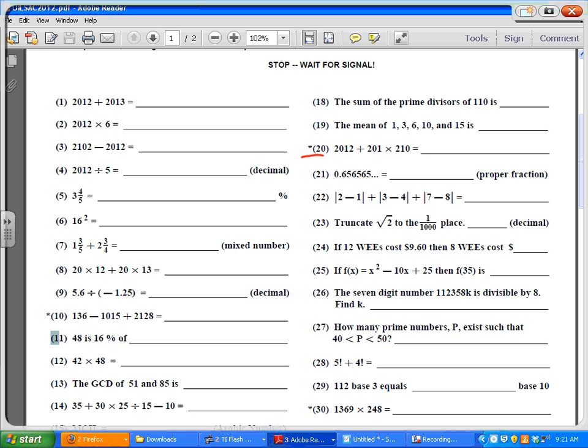Number 18 says the sum of the prime divisors of 110. Well, 110 is 2 times 55, and 55 is 5 times 11. So all I have to do is add 2, 5, and 11. What do you get? 7 plus 11, that's 18.